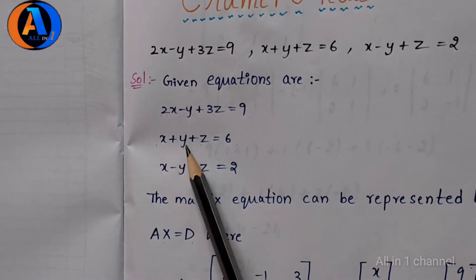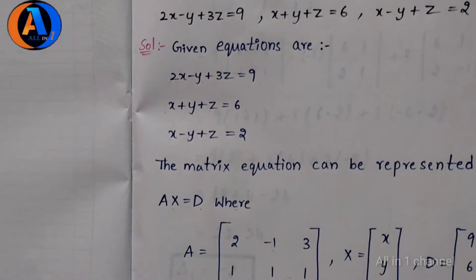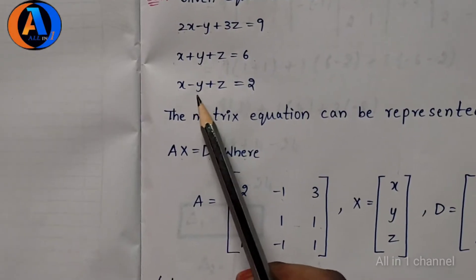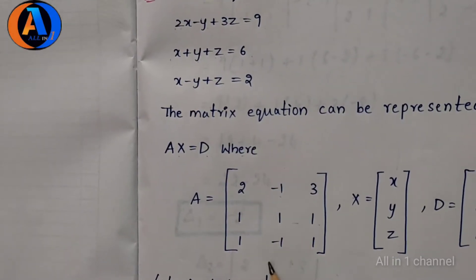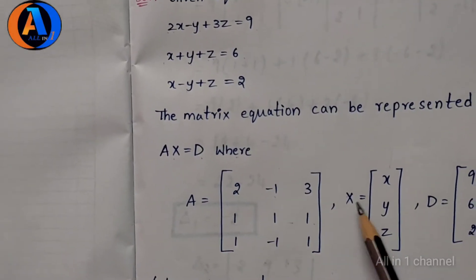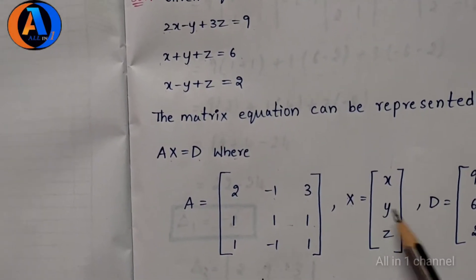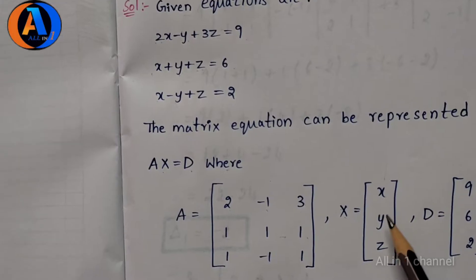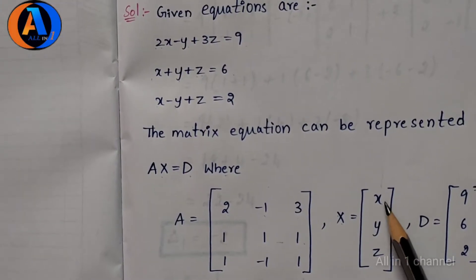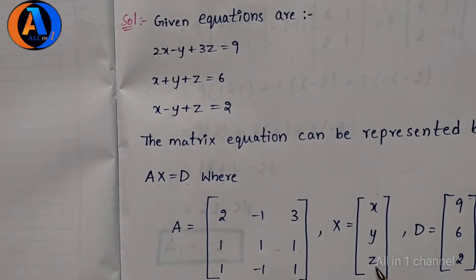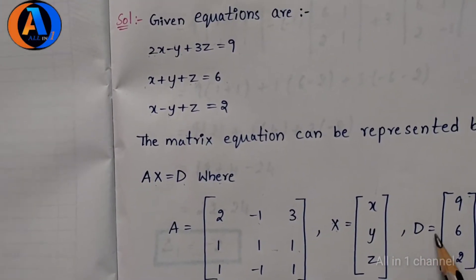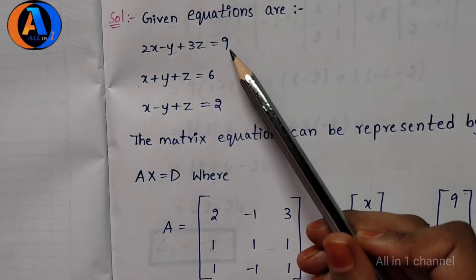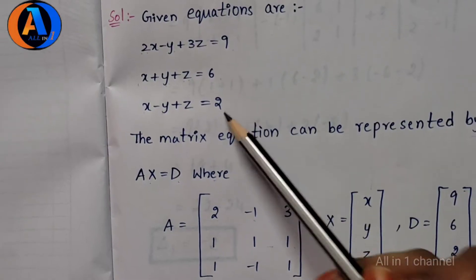The coefficient matrix A has rows: 1, 1, 1 and 1, minus 1, 1. The variable vector X contains x, y, z. And d equal to the constants: 9, 6, 2.